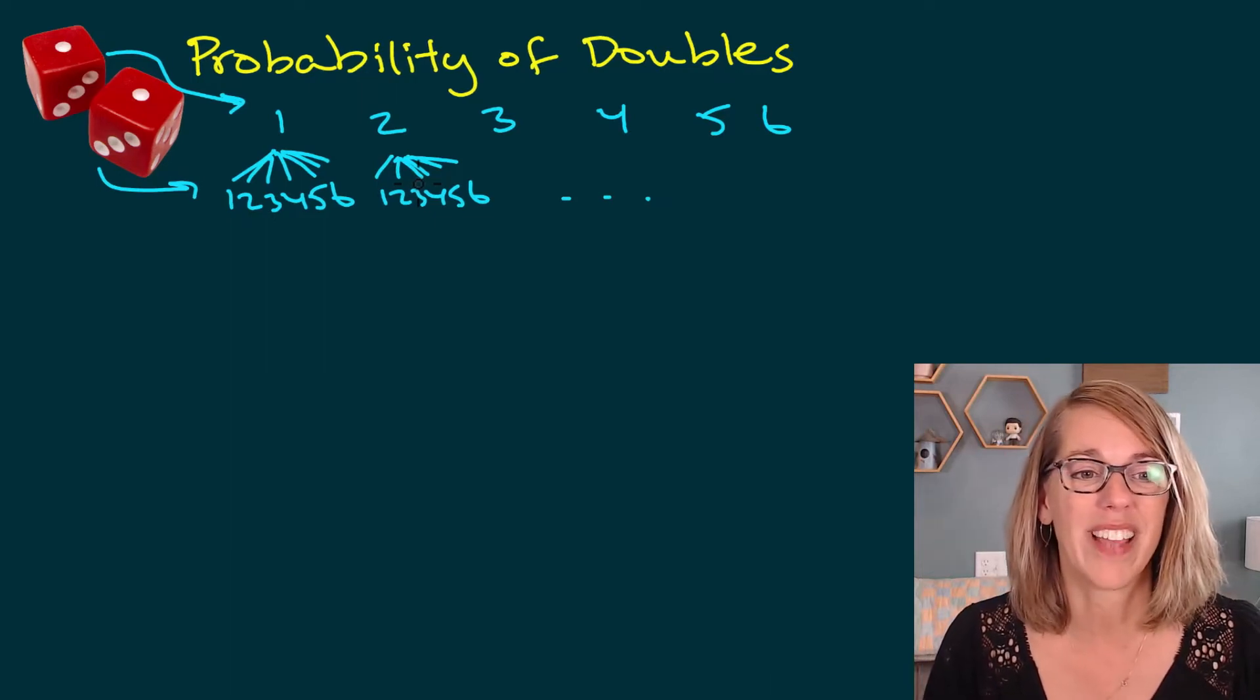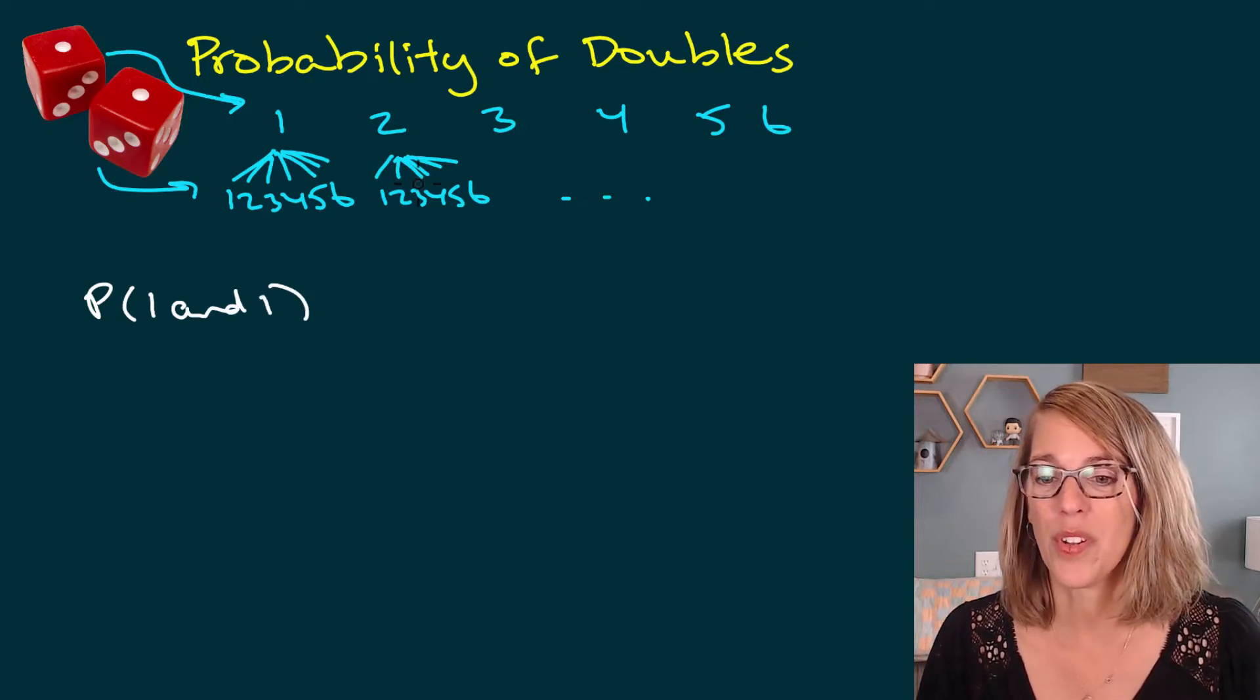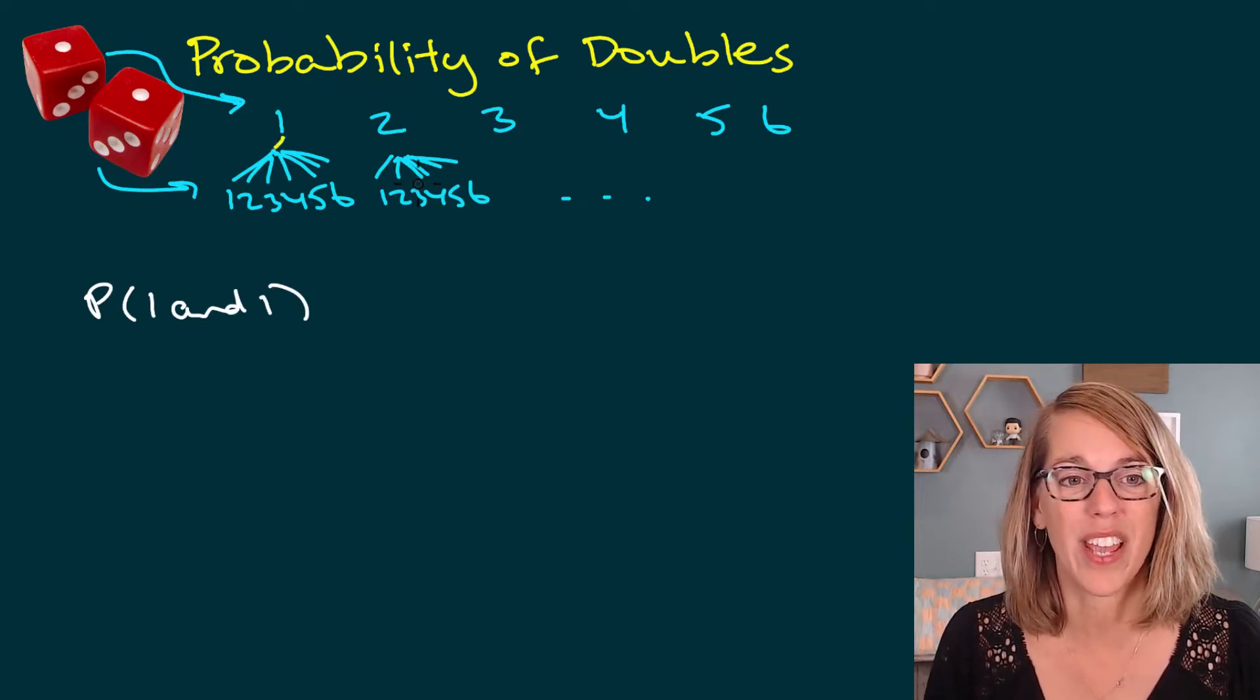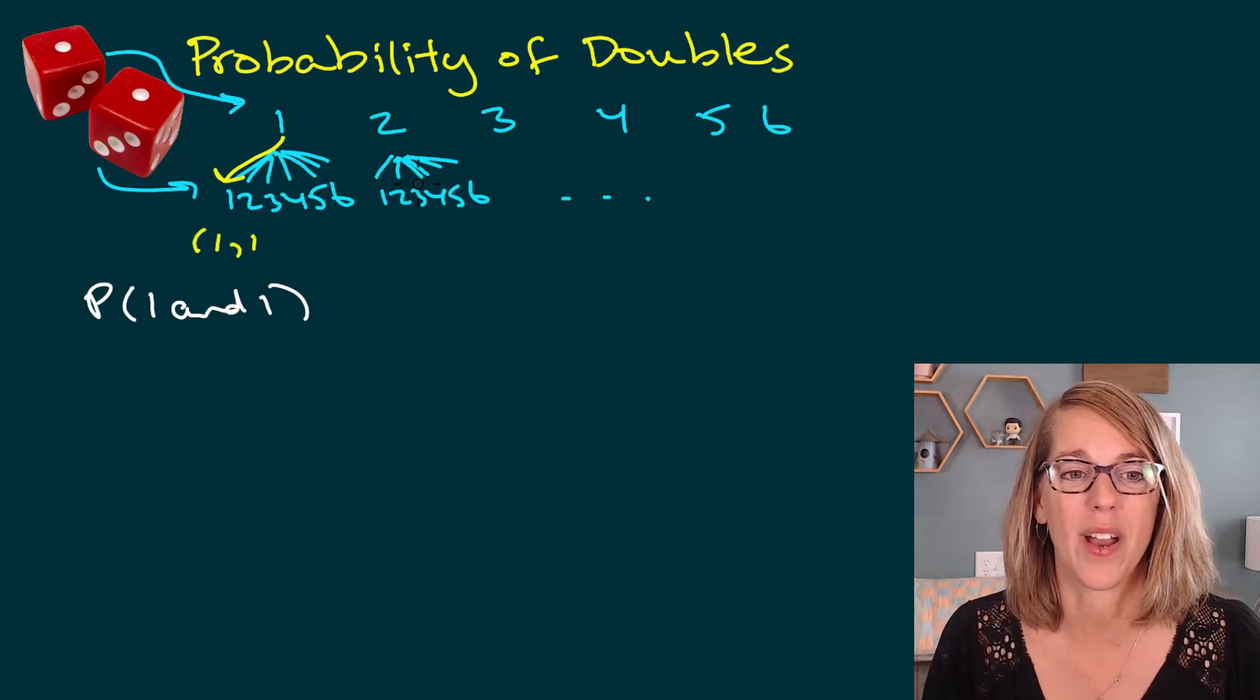But as I'm looking at my probability, I want to get the probability of getting a one and a one. Well, there's only one of those pairs, and it shows up right here. So there's my one comma one.